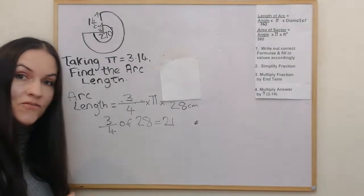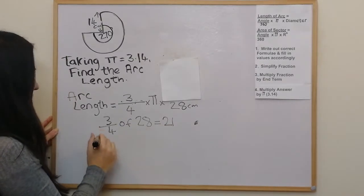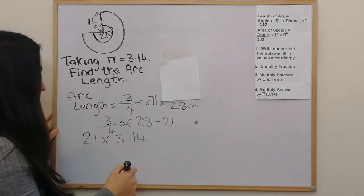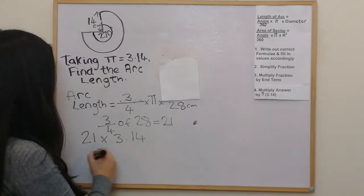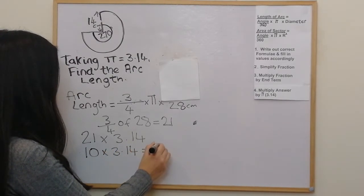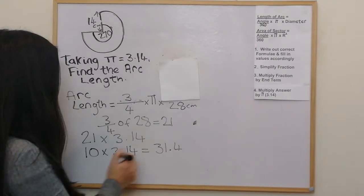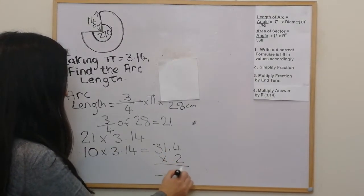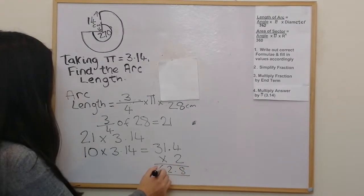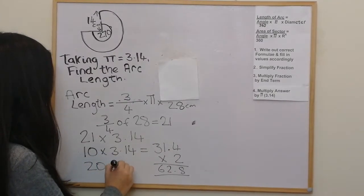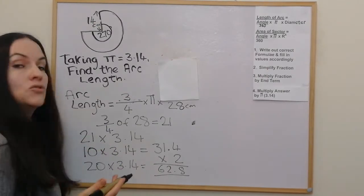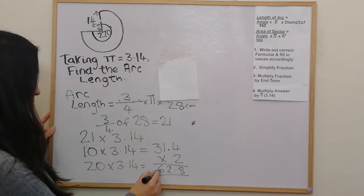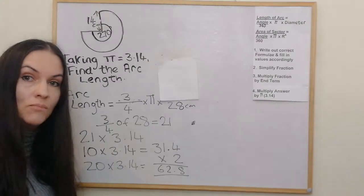That's our third step done. In the fourth step we multiply 21 by pi, which is 3.14. Doing this non-calculator as a long multiplication: 10 times 3.14 is 31.4. To get 20 times 3.14, double that to get 62.8. This approach works generally — for example, for 60 times you'd multiply by 10 then by 6. Since we need 21 times 3.14, we add another 3.14 onto 62.8.